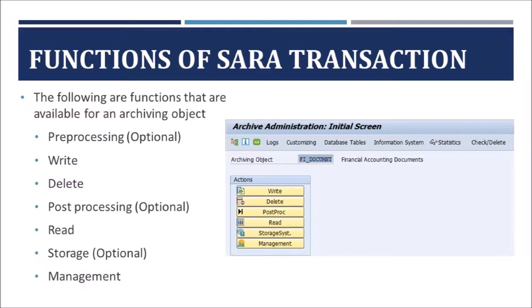Each archiving object provides programs for write, delete, read, etc. These functions are viewed as push buttons in SARA Transaction Code. The functions provided by SARA include preprocessing, write, delete, post-processing, index, storage system, and management. Note that not all functions are offered by all archiving objects. To view the functions offered by an archiving object, provide the archiving object name in the SARA Transaction Code and click the Enter button — it will display the functions offered by that specific object.